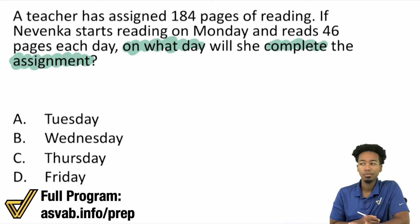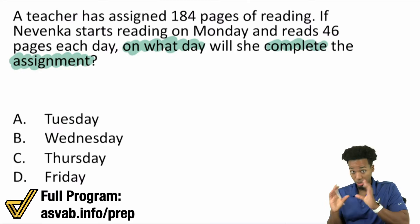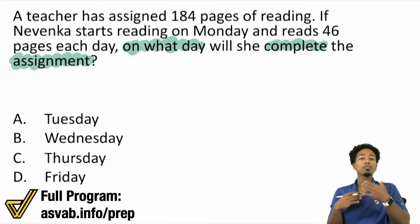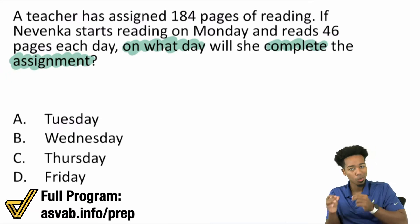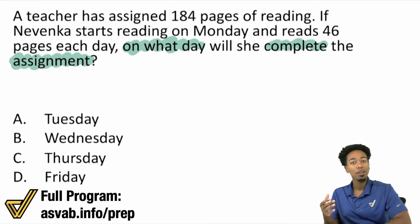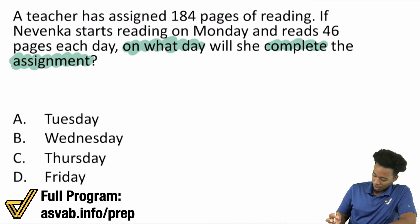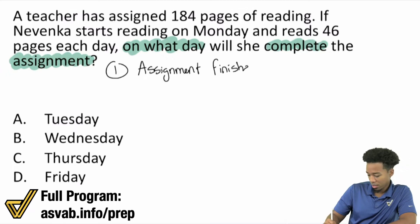Step two is going to be: what information do we have that relates particularly to finishing this assignment? Remember, we first want to think about this as a story before we worry about the numbers. Worry about the story first — it gives us the advantage of understanding what's going on. So step one: our goal is 'assignment is finished on blank.'